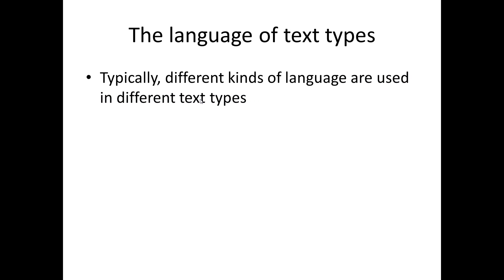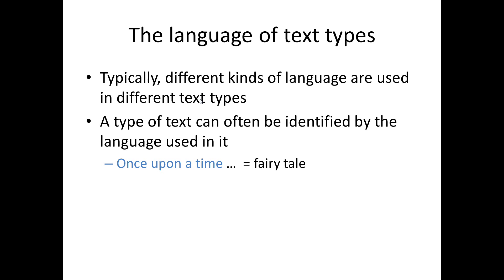Typically, different kinds of language are used in different text types, and it's often easy to identify a type of text by the language used in it. For example, if a text begins with 'once upon a time', we know that it's a fairy tale — that is, a type of imaginative text.